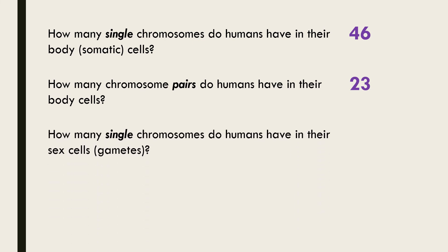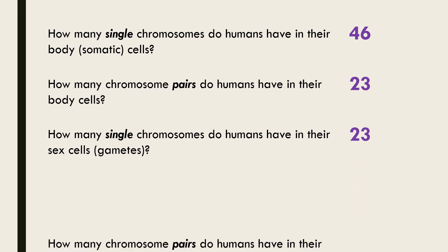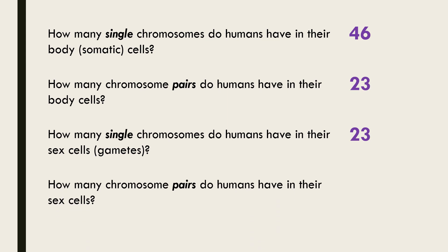Human gametes or sex cells have 23 single chromosomes. However because gametes are haploid they have zero pairs of chromosomes.